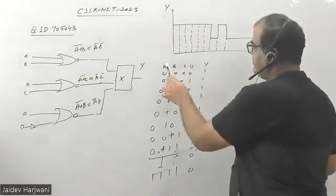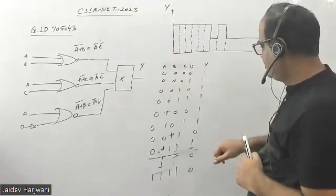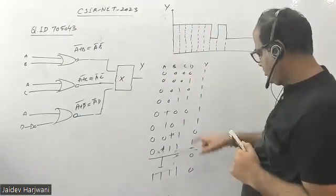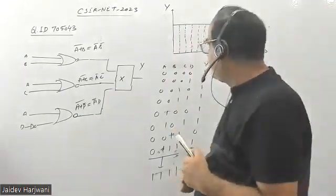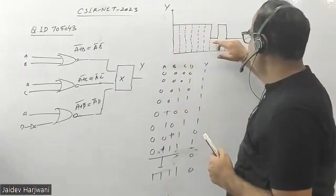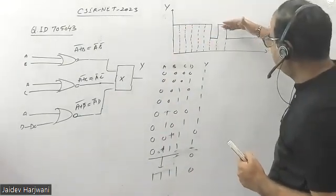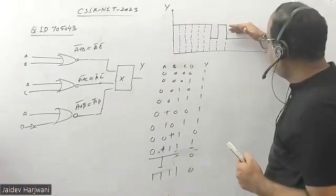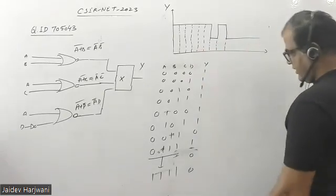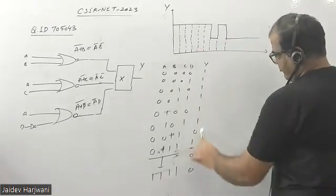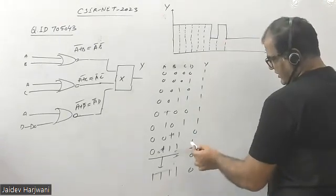If you carefully look at the output, you can see the combinations of ABCD from 0000 to 0101 — that is from zero to five — you get a high output. For six you get a low output, and for seven you get a high output again. After seven to fifteen you get a low output. So if you make a truth table, for the initial six entries you get one, then zero, then again one, and the rest are all zero.